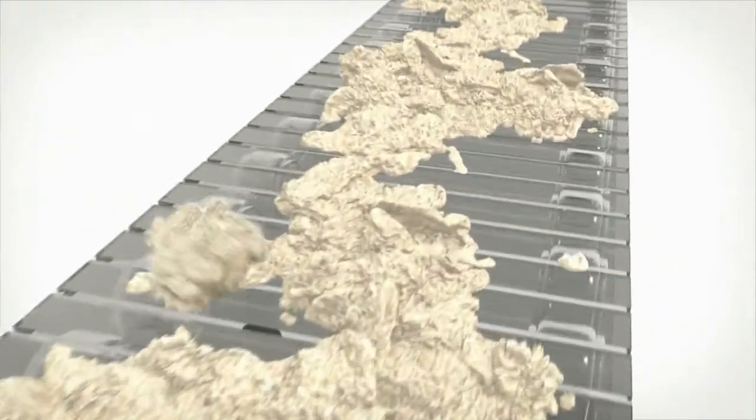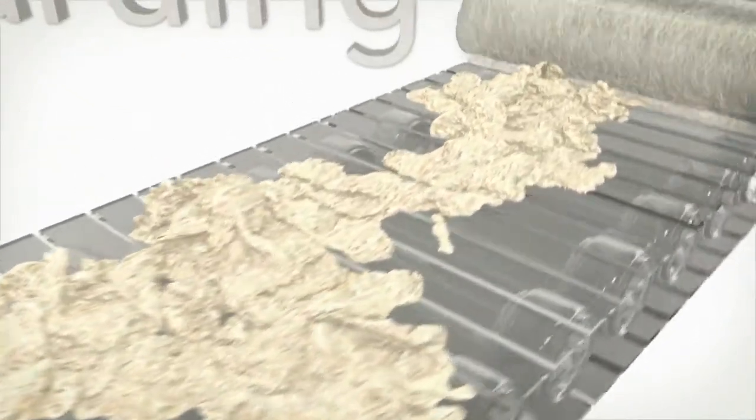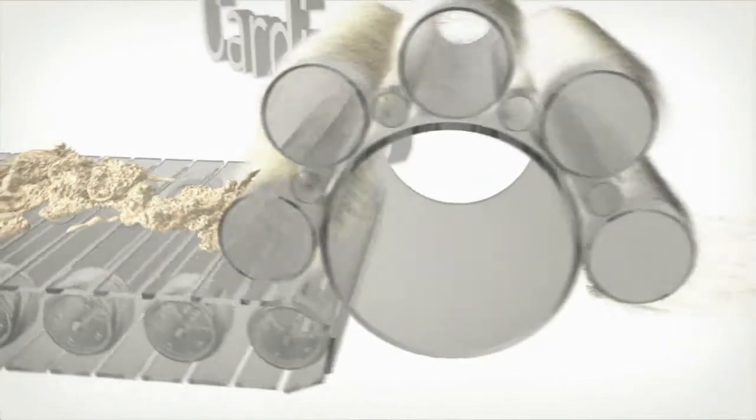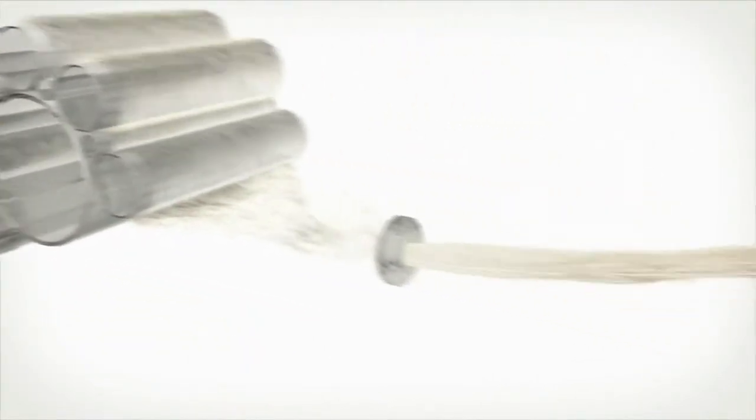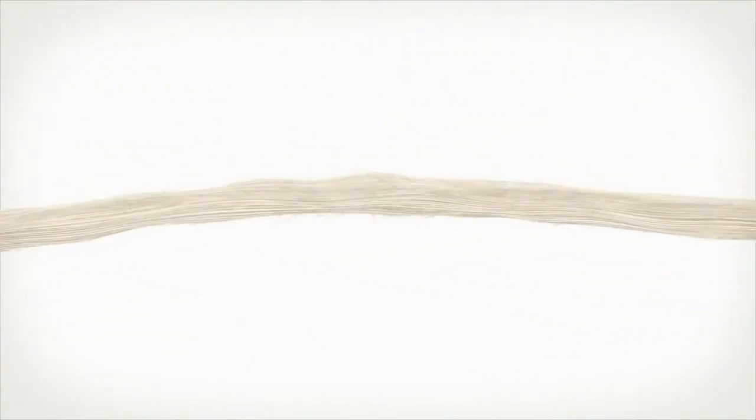The wool is then blow dried and undergoes a process called carding, opening up the tangled fibers into a continuous length. At the end of carding, the woolen roving is extracted.